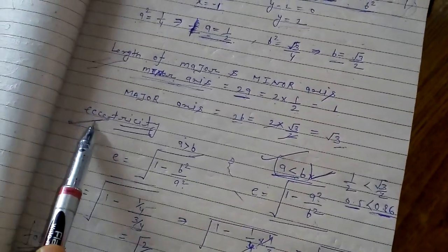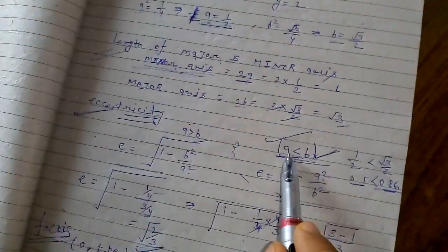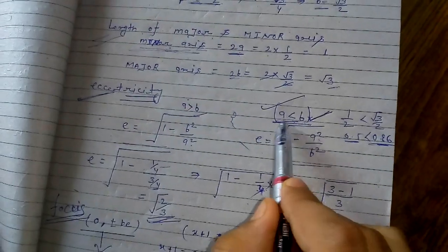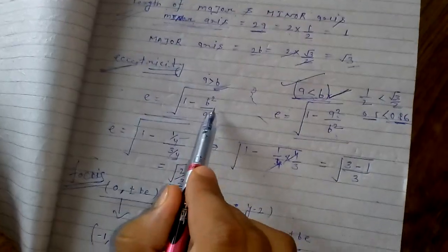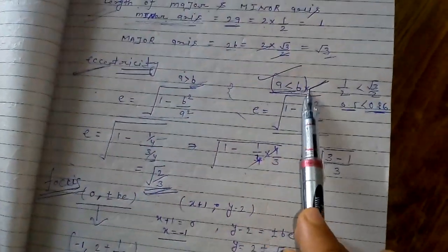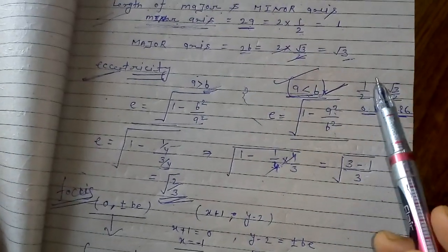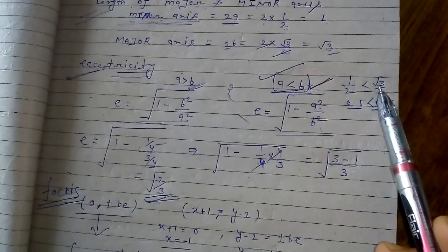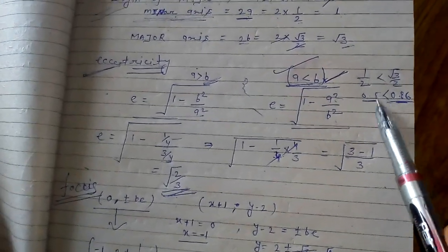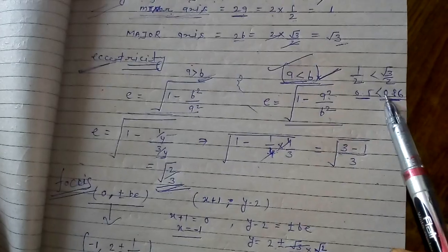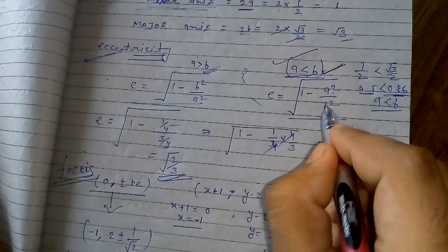For the eccentricity, we need to check whether a is greater than b or a is less than b. If a is greater than b, we apply the formula e equals under root 1 minus b squared by a squared. If a is less than b, we apply e equals under root 1 minus a squared by b squared. Since a equals 1 by 2 (0.5) and b equals root 3 by 2 (0.86), clearly a is less than b.